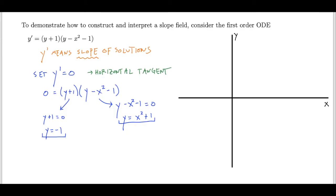The slope field is simply a representation of the properties gathered from the differential equation. We've identified two curves where solutions will have slopes of zero, and I want to display those properties on a graph. Along the line y equals negative 1, solutions have a slope of zero — that perfectly flat line will be one of the solutions to the differential equation.